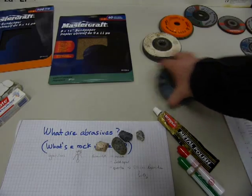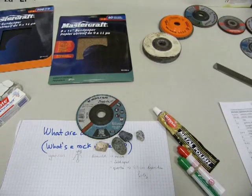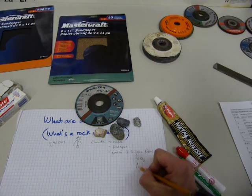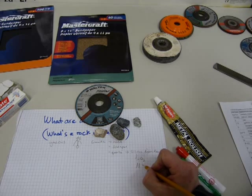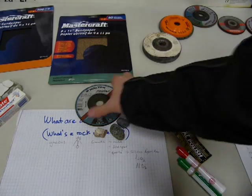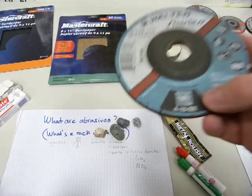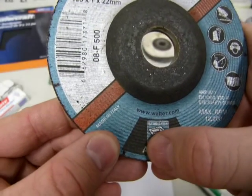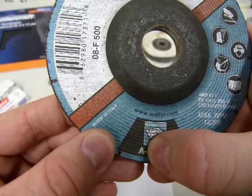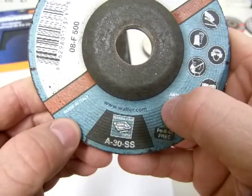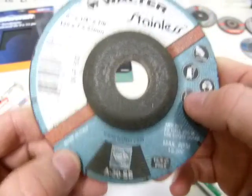Probably the most frequently found abrasive material in these products is aluminum oxide — Al₂O₃. The letter 'A' on an abrasive wheel refers to aluminum oxide, and the number (like 30) refers to its grit size.